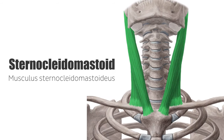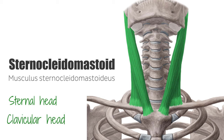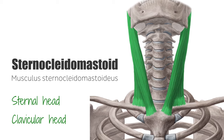The sternocleidomastoid muscle is a two-headed muscle of the neck. The two heads are called the sternal head and the clavicular head. The muscle lies very superficially so that it is both easily visible and palpable. The carotid pulse may be felt in the middle third of the front edge.